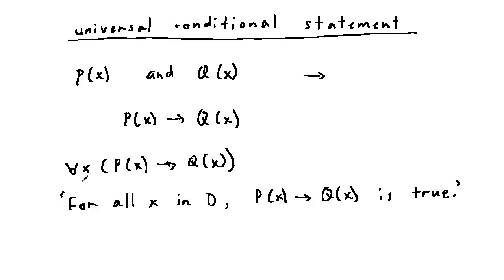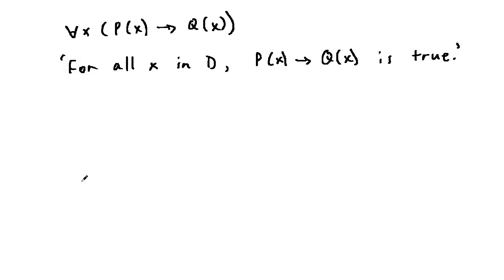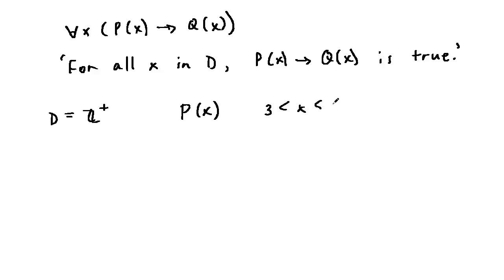For example, let D be Z+, the set of all positive integers, and let P(x) be the predicate x is greater than 3 and less than 6. And let Q(x) be the predicate x is greater than 2 and less than 7.